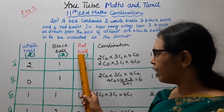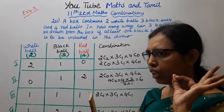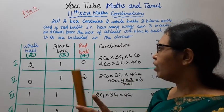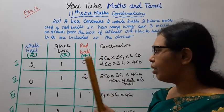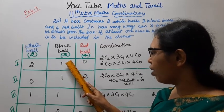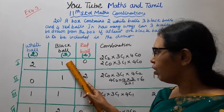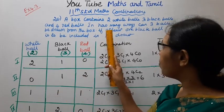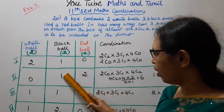When drawing 3 balls, at least one black ball must be included. The number of black balls in the selection can be 1, 2, or 3.